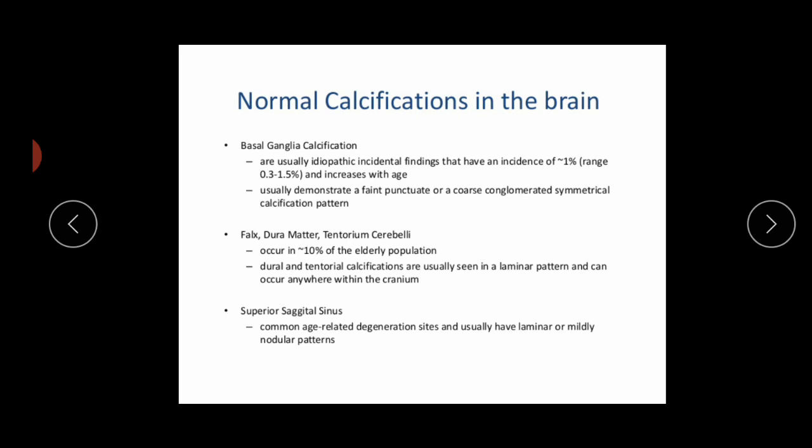Basal ganglia calcifications are usually idiopathic incidental findings with an incidence of less than one percent, increasing with age. They usually demonstrate a faint punctate or coarse, symmetrical calcification pattern. Falx dura mater and tentorial calcifications occur in less than 10% of the elderly population and are usually seen in a laminar pattern, and can occur anywhere within the cranium.